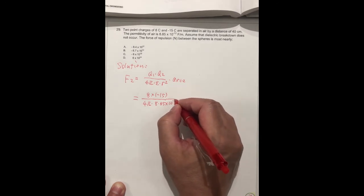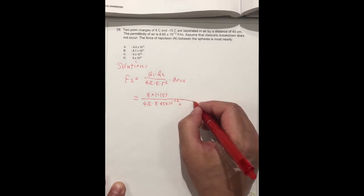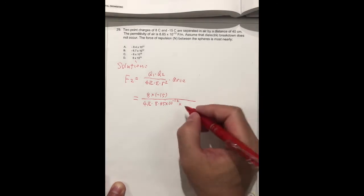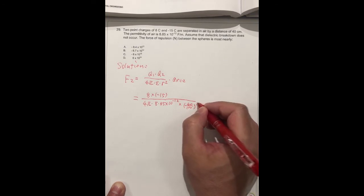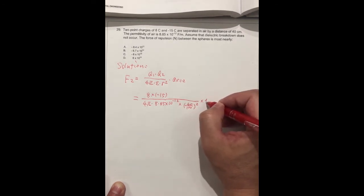R squared—R is 40 centimeters. We have to change to meters, so 40 divided by 100, and then squared.